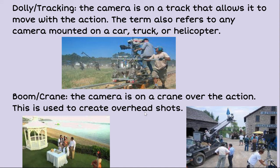Dolly slash tracking describes a camera on a track — a little track like you see in the top picture — that allows it to move with the action. It also refers to any camera mounted on a car, truck, or helicopter. They were recently filming Shameless out here with a car mounted on the back of a truck, filming the main character Gallagher in a car with no windows as it moved — that's a form of dolly tracking. A boom crane is a camera on a crane above the action. Nowadays they often use drones for that too, but this is the old-school way to do it.